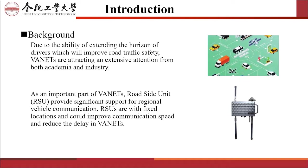Vehicles in VNETs act as communication nodes, exchanging safety information such as location, speed, and brake states with surrounding vehicles, base stations, and infrastructure by means of onboard devices. As an important part of VNETs, roadside units provide significant support for regional vehicle communication. RSUs have fixed locations and can improve communication speed and reduce delays in VNETs.